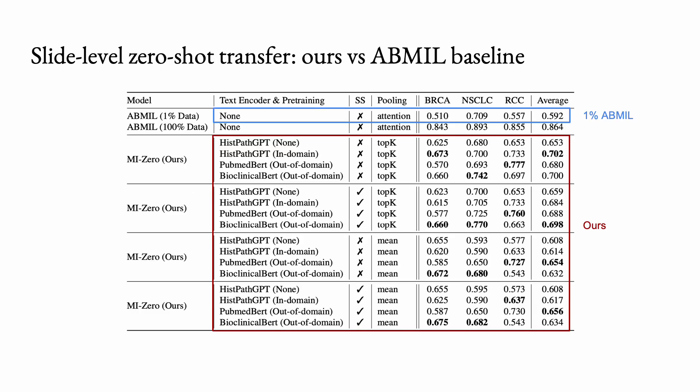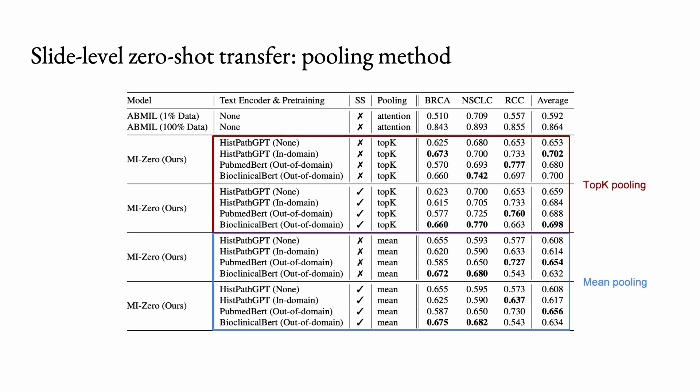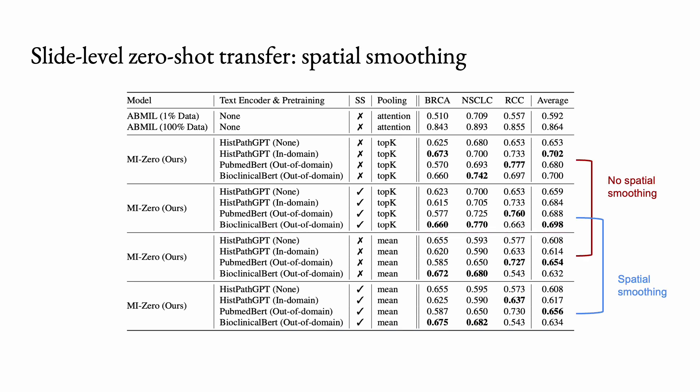We compared performance between using a text encoder pre-trained on in-domain pathology text data, which we call HisPath-GPT, encoders pre-trained on non-pathology-specific medical data—namely PubMed-BERT and Bioclinical-BERT—as well as a text encoder trained from scratch. We also experimented with different pooling methods and spatial smoothing. Overall, our models either perform on-par or better than AB-MIL baselines using 1% of training data for every task. In terms of pooling method, we find that top-k pooling performs better than mean pooling, while spatial smoothing does not change results significantly.